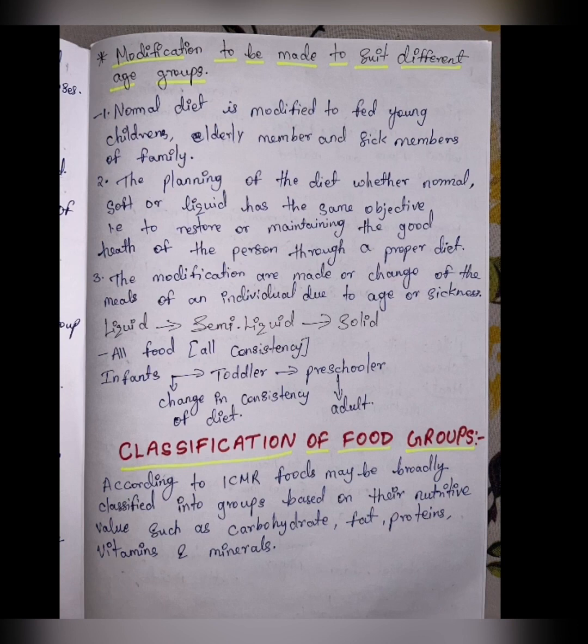Normal diet is modified to feed young children, elderly members, and sick members of the family. The planning of diet — whether normal, soft, or liquid — has the same objective: to restore or maintain good health through a proper diet. Modifications are made due to age or sickness.